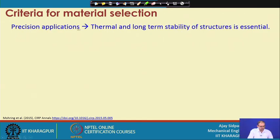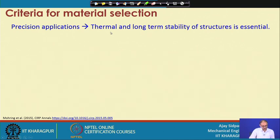For precision applications, we have to see the thermal and long-term stability of the structure — that is very essential. You have to find materials which have a low coefficient of thermal expansion and are also rigid. Long-term stability is important because the structure should not deform due to machining forces, otherwise after a few years you may get trouble from the machine.